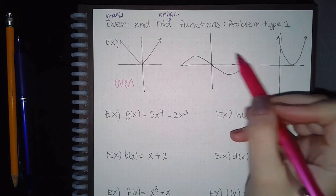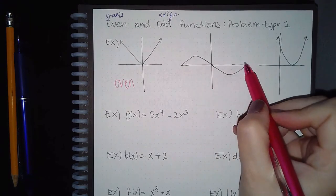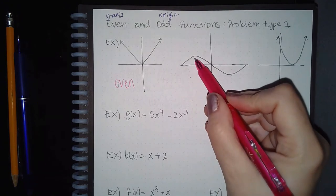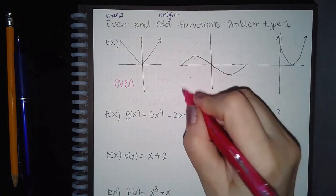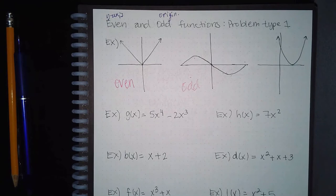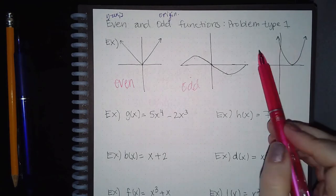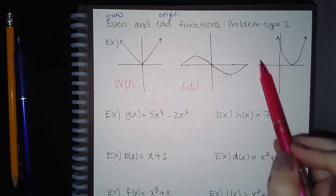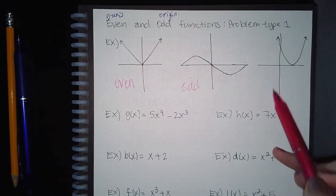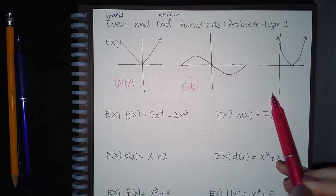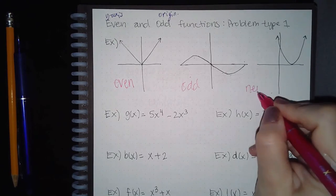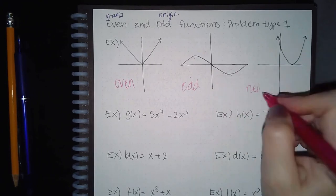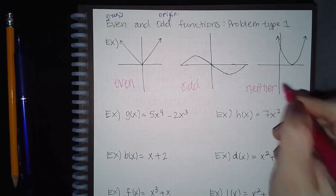If I flip this graph over the y-axis and it does not land on itself, but if I flip it over the y-axis and then the x-axis and it does land on itself, then this one is an odd function. Here, if I flip it over the y-axis it does not land on the original, and if I flip it over the y-axis and then the x-axis it still does not land on the original — so this one is neither even nor odd.